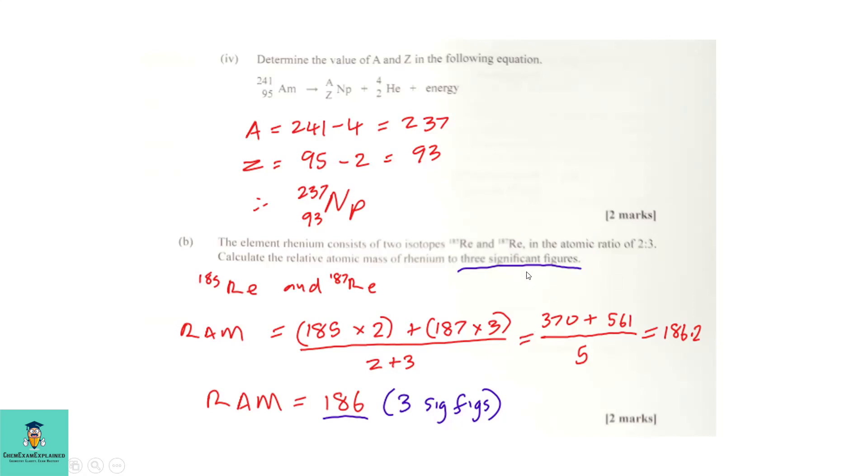Now the question could come a different way, where you'll get the mass numbers and percentage abundance. In that case, you would multiply the mass number by the percentage abundance of each isotope, divided by the total percentage, which should be 100. But in this case, we are working with ratio.